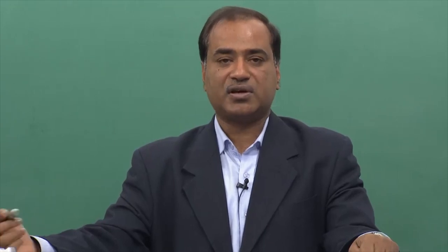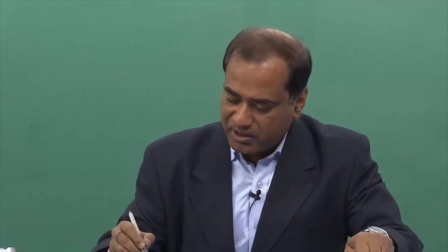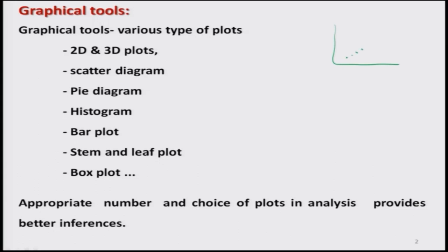There are various types of plots and graphics which give us information about the data — the information that is hidden inside the data. For example, if I make a plot where points are lying on a straight line, nobody is telling us explicitly, but this information is revealed by the graphic. Similarly, if data follows a particular type of function, that information can also be retrieved using different types of plots.